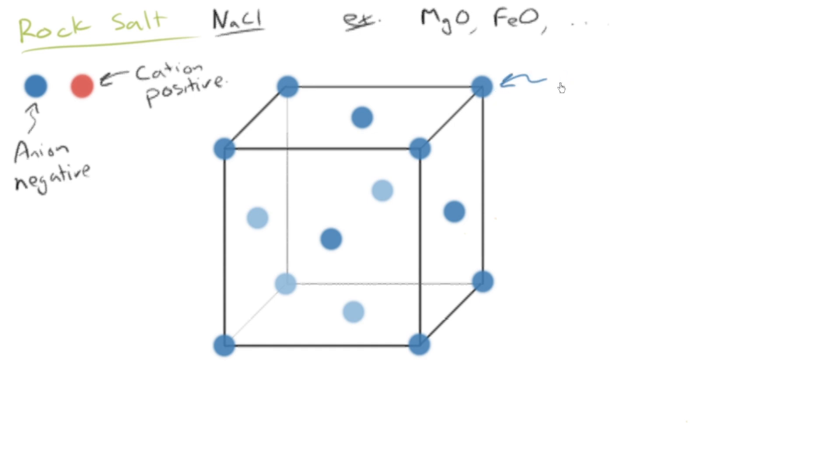All right. So these are the anions in FCC-type positions.